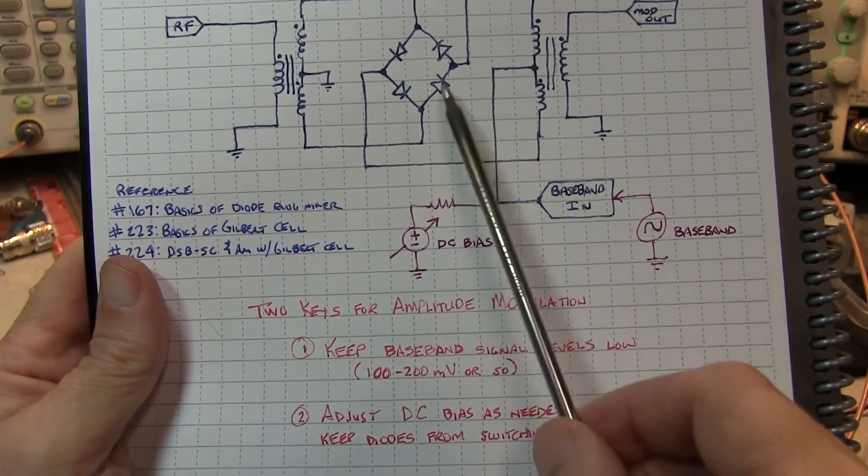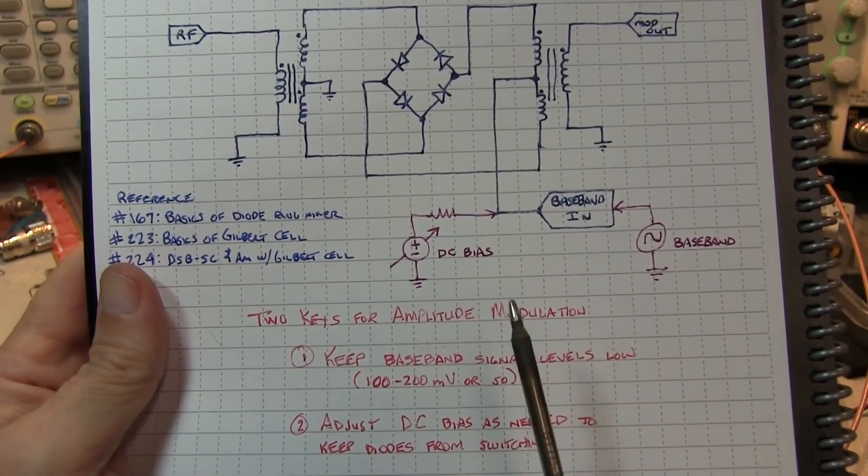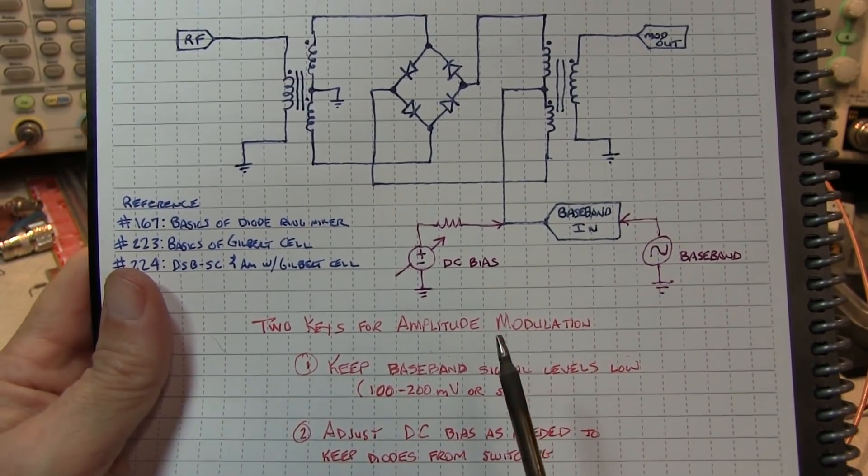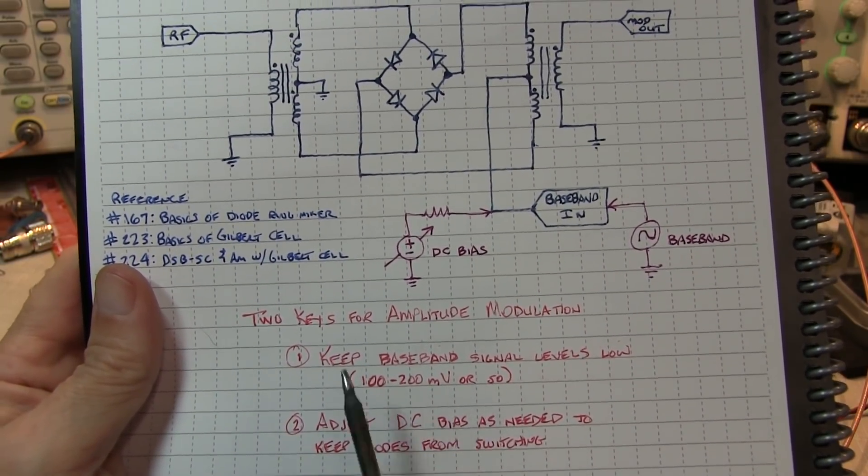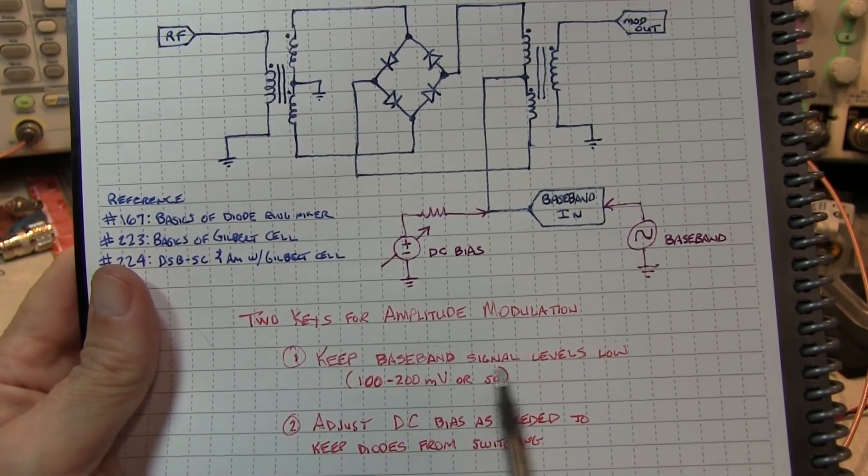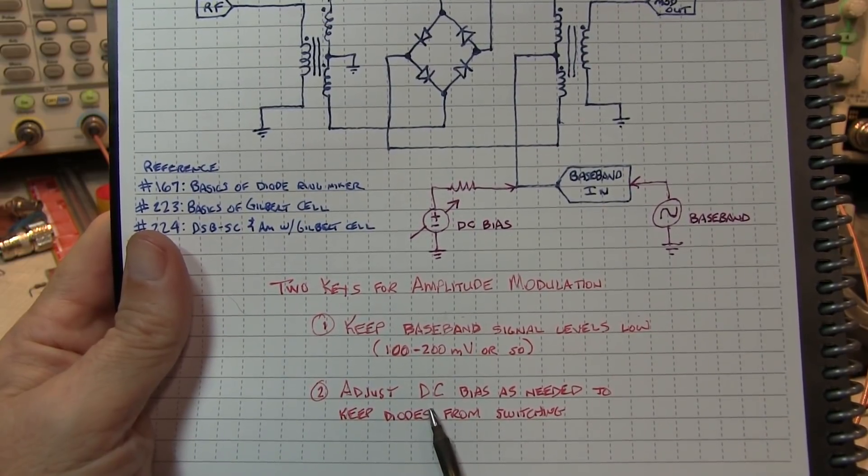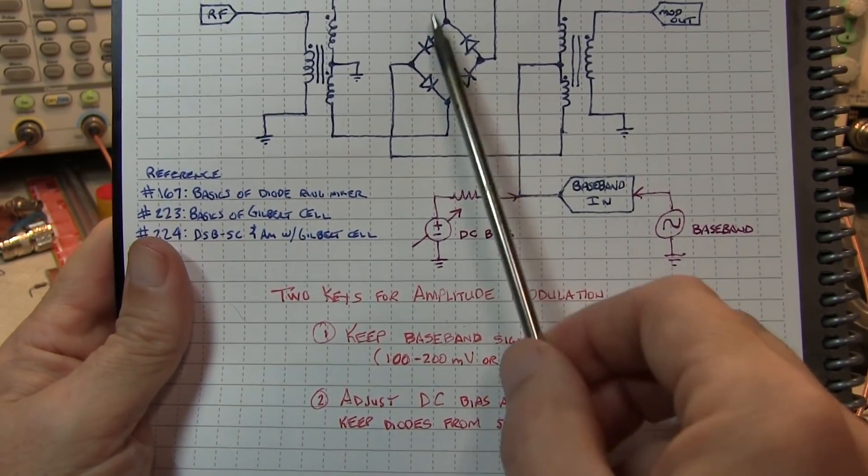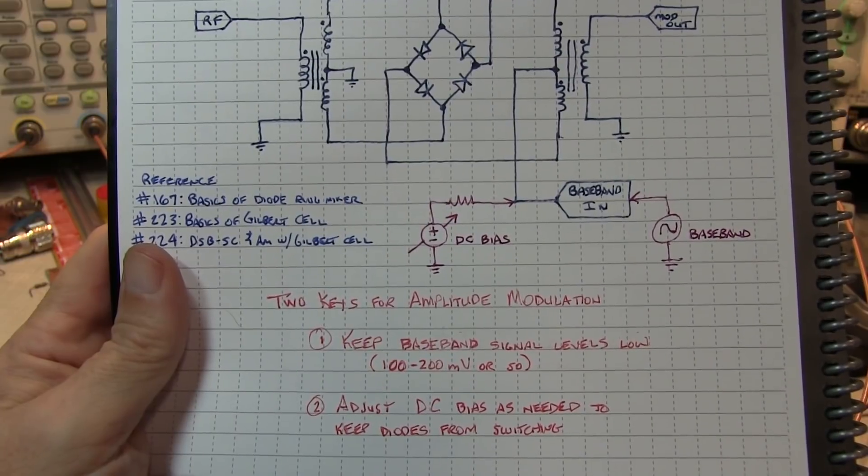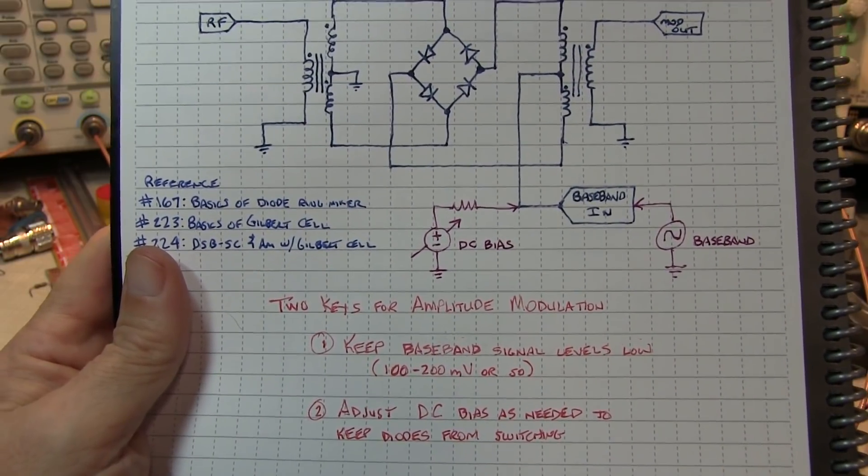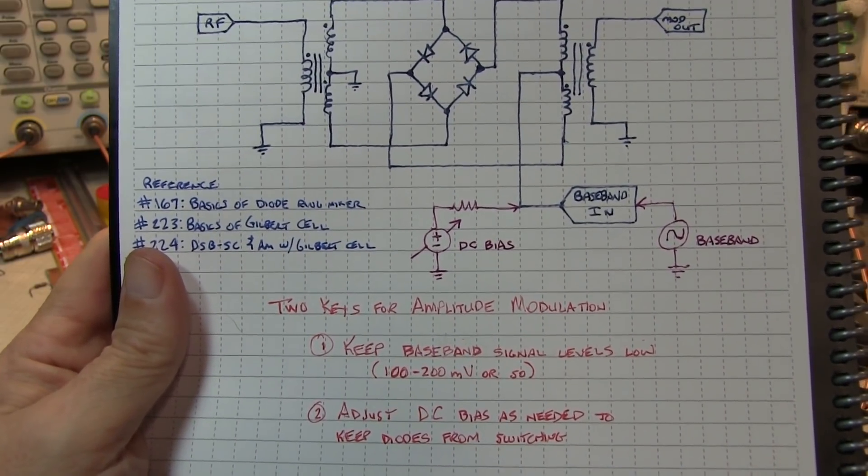Because you really don't want to drive the diodes too far non-linear because you will actually create distortion in the modulated signal. So the first key is to keep the baseband signal levels low. And the second key obviously is to adjust the DC bias to get the level of amplitude modulation that you want. So let's take a look at it on the scope. It's probably the easiest thing to do.